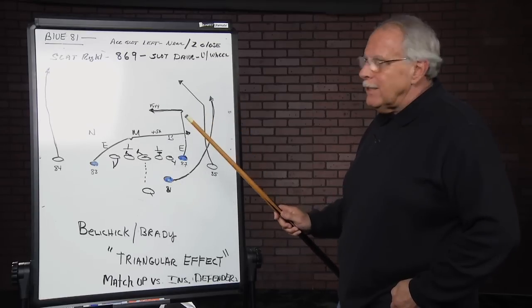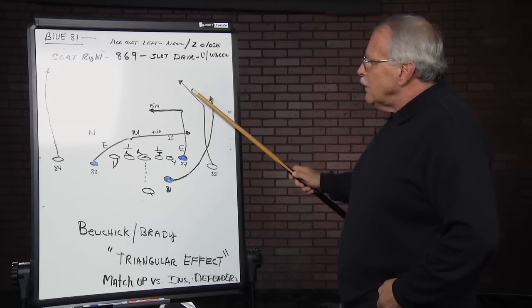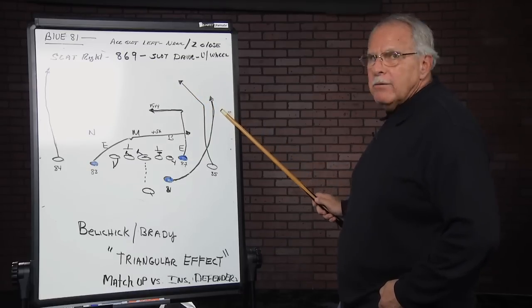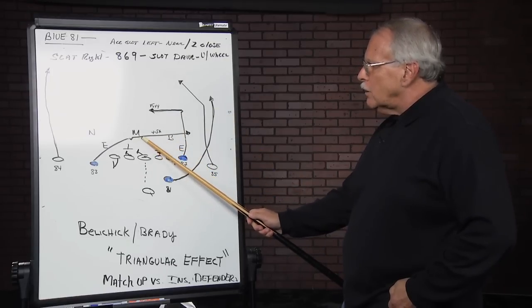Let's say that they don't play it that late. Let's say that the secondary rolls to this side so they effectively take away the wheel route. Immediately, Brady is now going to focus on Welker.